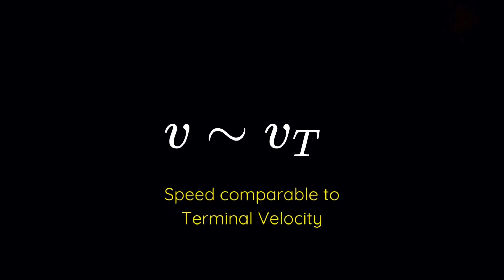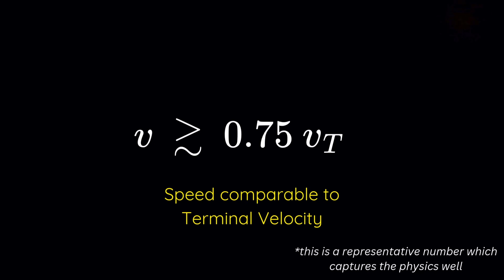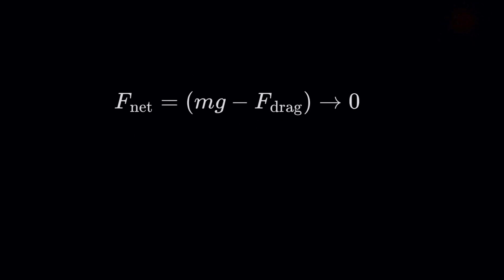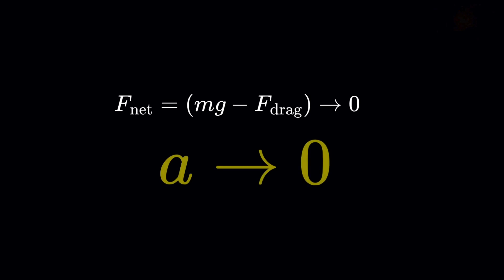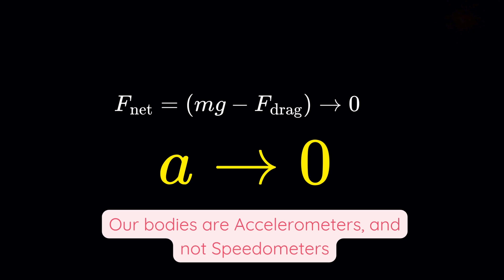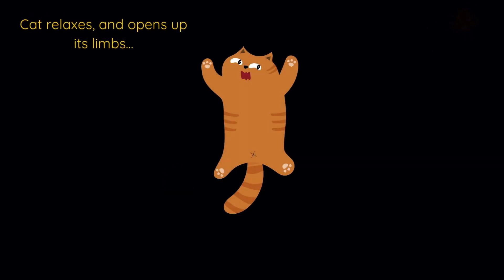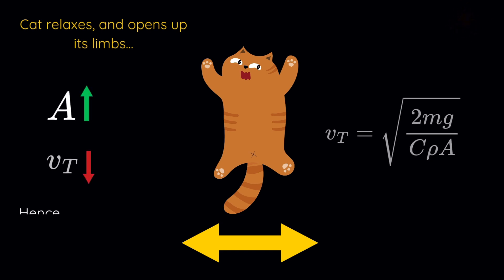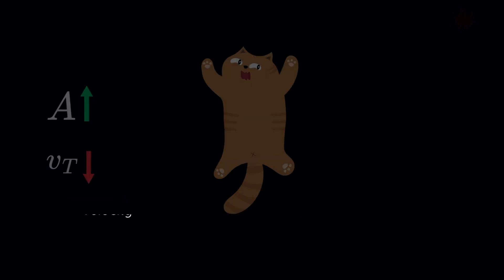Once the cat hits a significant fraction—say about 75 percent of its terminal velocity—it stops feeling that sensation of falling as much, because acceleration has decreased significantly. Cats, just like humans, are sensitive to acceleration and not velocity. So at this point, they relax. And when they relax, they spread out their legs, flatten their bodies, and increase the cross-sectional area. This is what I like to call the terminal relaxation effect.